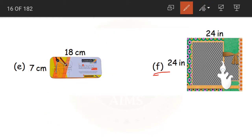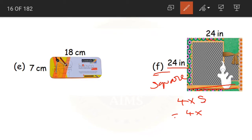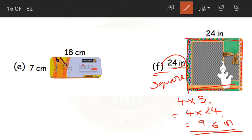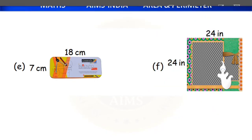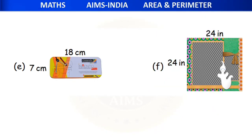Coming to question F. We are having a greeting card which is in the shape of a square. The perimeter is 4 into S, that is 4 into 24. 4 fours are 16, 4 twos are 8 plus 1 is 9 — so 96 inches. The perimeter of this square-shaped greeting card is 96 inches. I hope it is clear how to use the formula for perimeter of square and rectangle.